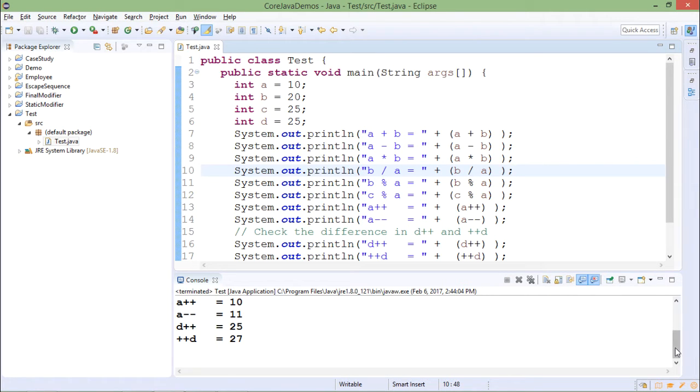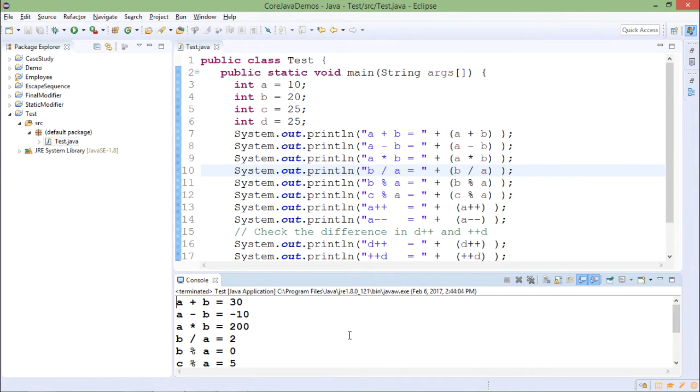I will run this code. Let me cross-check the values. a+b is 30, so it is correct. a-b is 10 minus 20 equals -10. a*b is 200 (10 times 20). b divided by a is 2 (20 by 10). b mod a is 0 (20 mod 10).